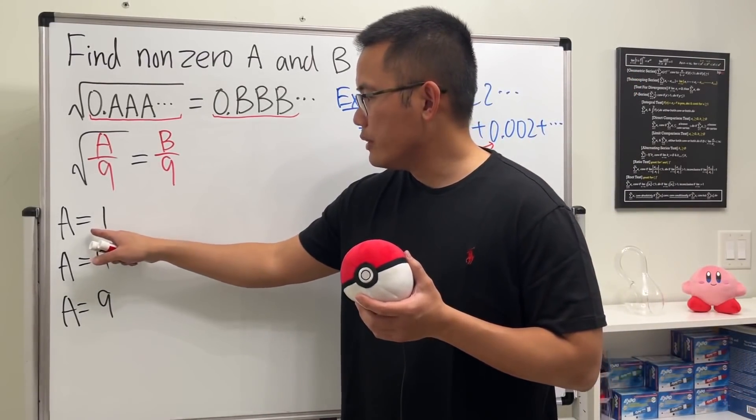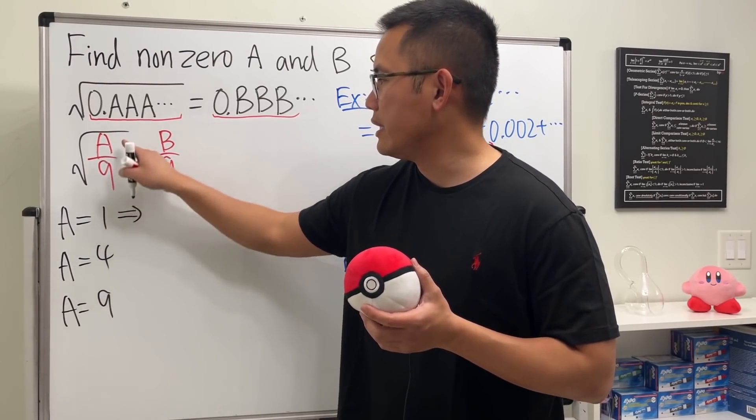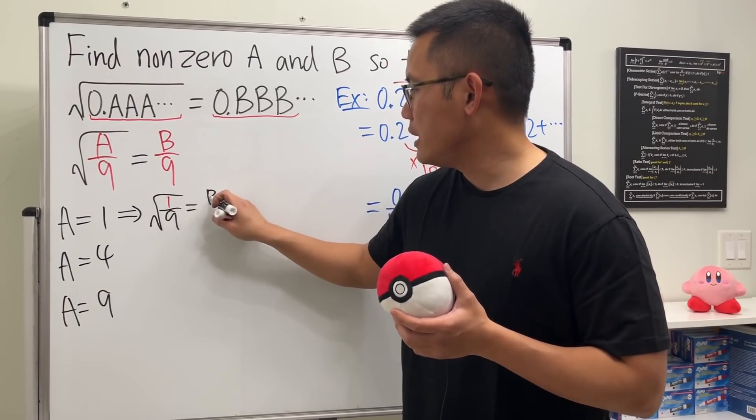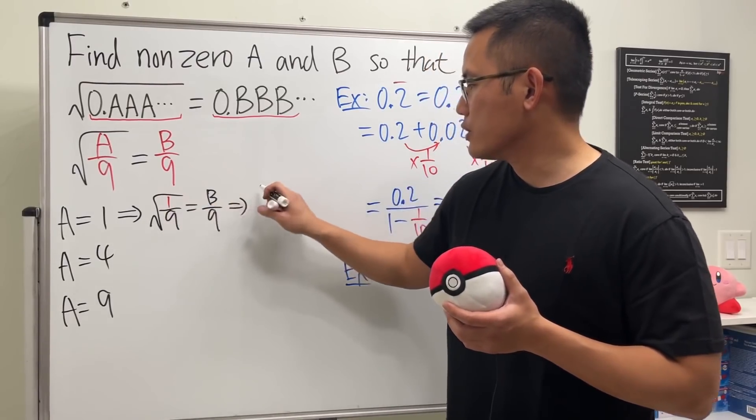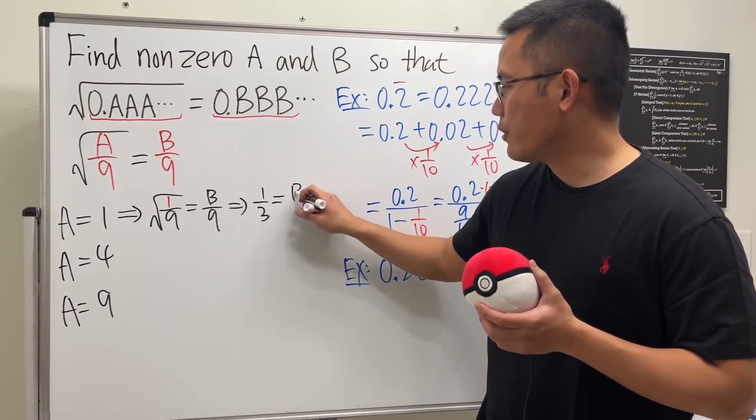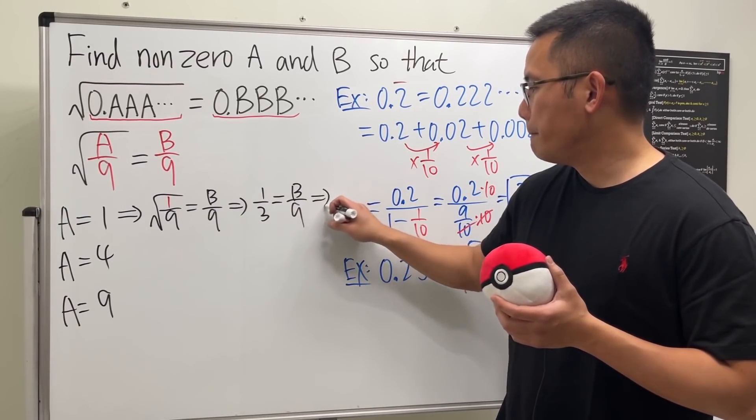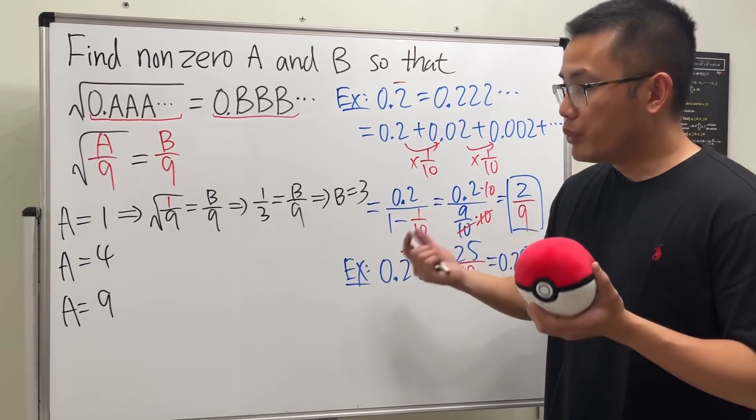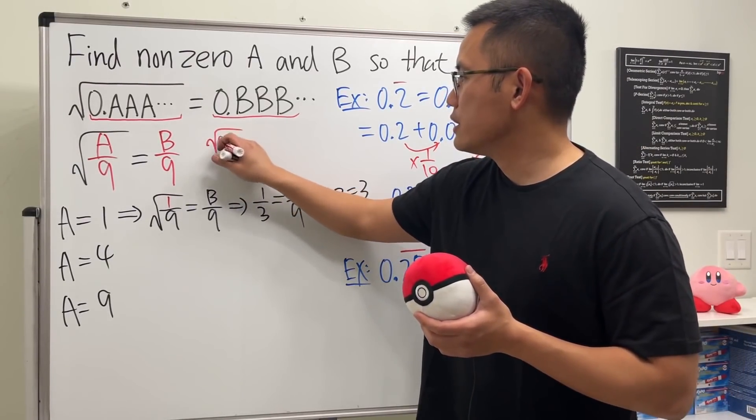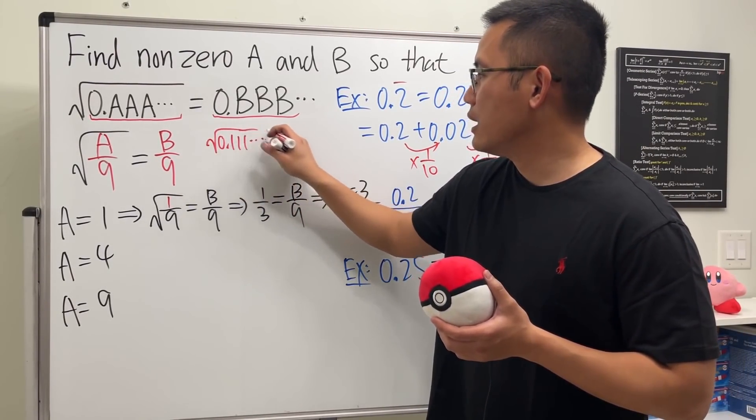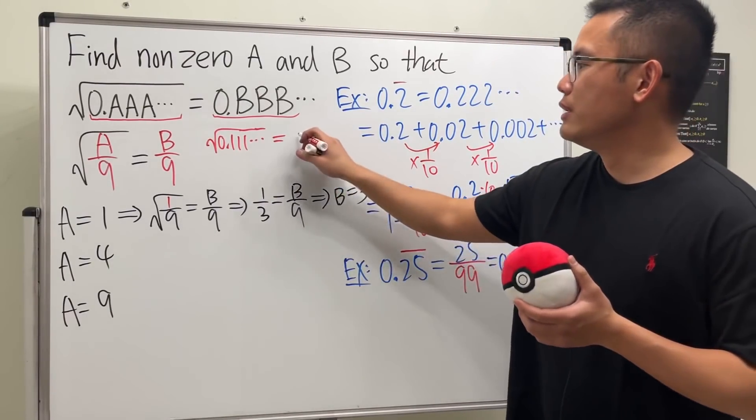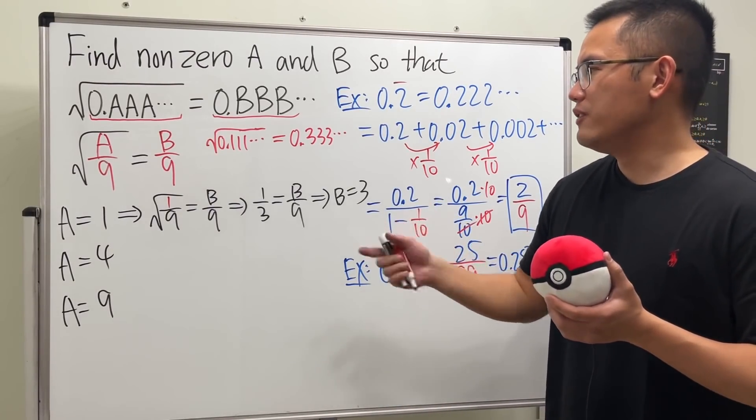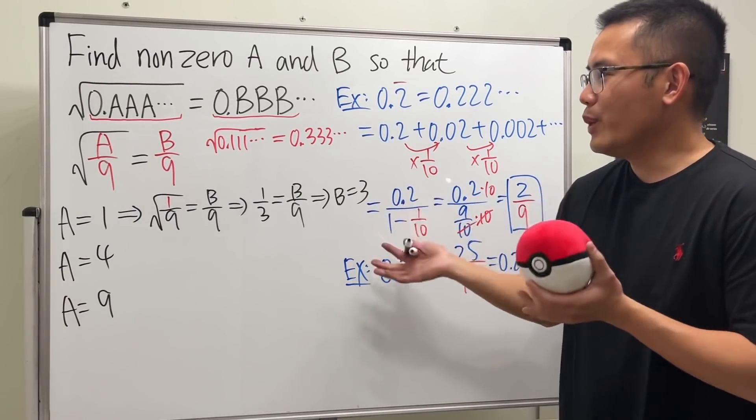Once we know A, we can solve for B. Put 1 in: square root of 1/9 equals B/9. This is 1/3 equals B/9, so B equals 3. The first combination is 1 and 3. This means the square root of 0.111... equals 0.333..., which is more believable if you square both sides.